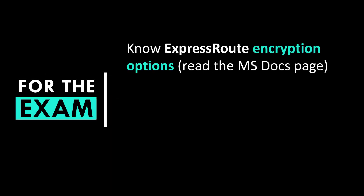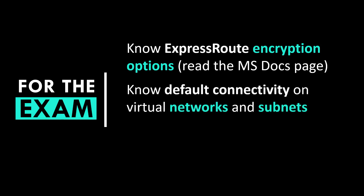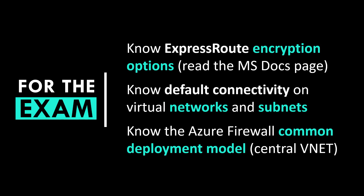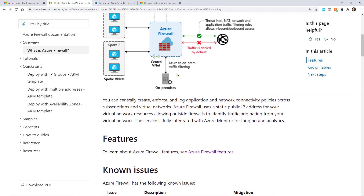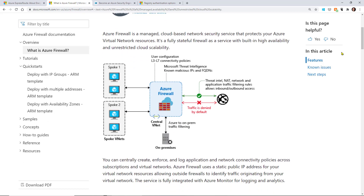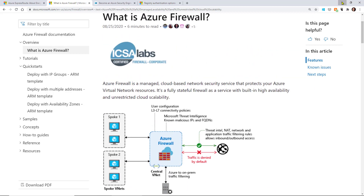For the exam, let's talk about where you want to focus. Know the express route encryption options — read the Microsoft Docs page, it's actually mentioned in the AZ-500 exam prep guide. Know the default connectivity of your virtual networks and subnets: subnets are reachable from one another by default when they're in the same virtual network, but VNets are not connected by default. Know the common deployment model for Azure Firewall — commonly deployed with a central VNet.